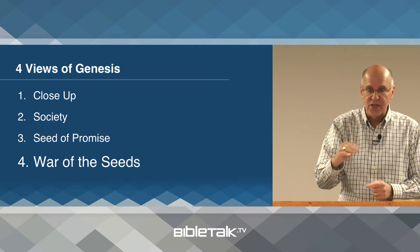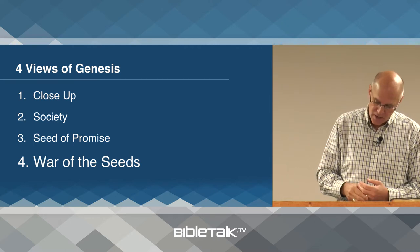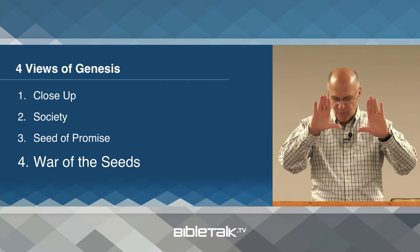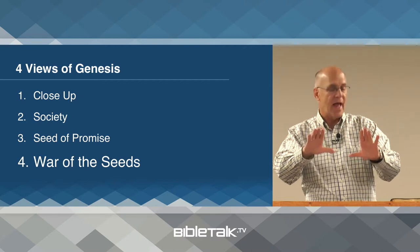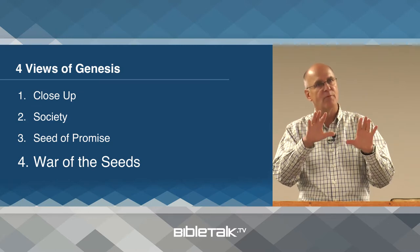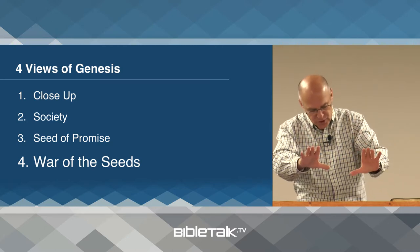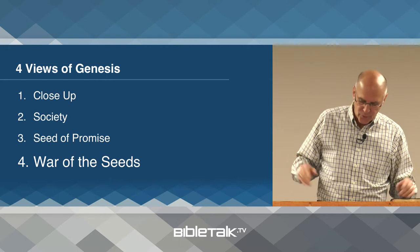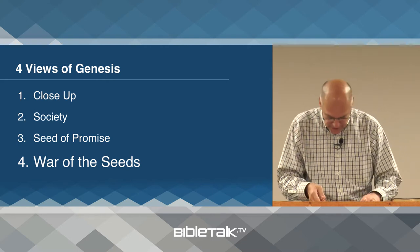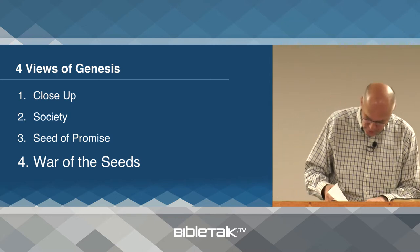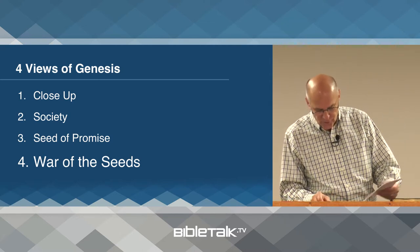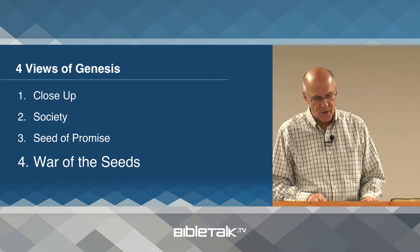So those are the four vantage points, the four views of Genesis. Last week we went from a close-up view of Cain and his punishment — how God punished him, what it meant — and then we switched to a wide view of the result of his wickedness in society. In this class we're going to start with a final close-up view of Adam and Eve and then take a long view of the seed of promise.